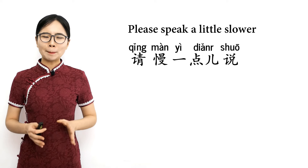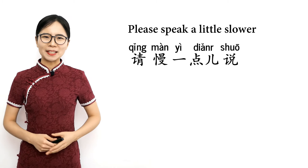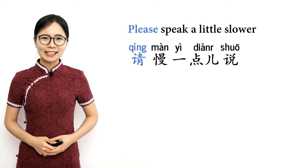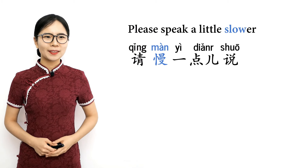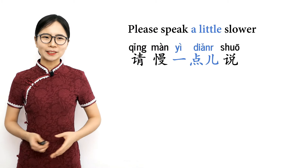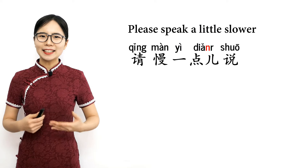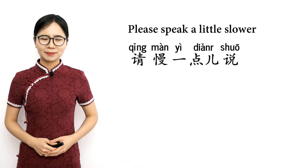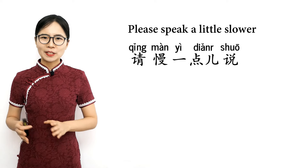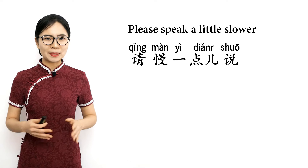When you are first learning Chinese, it can feel like everyone is speaking so fast. Maybe they are. When that happens, you can say 请慢一点说 — please speak a little slower. 请 means please, 慢 means slow, 一点 means a little (note that the N in 点 is silent), and 说 means speak. So it's literally 'please slow a little speak' — in other words, please speak a little slower.